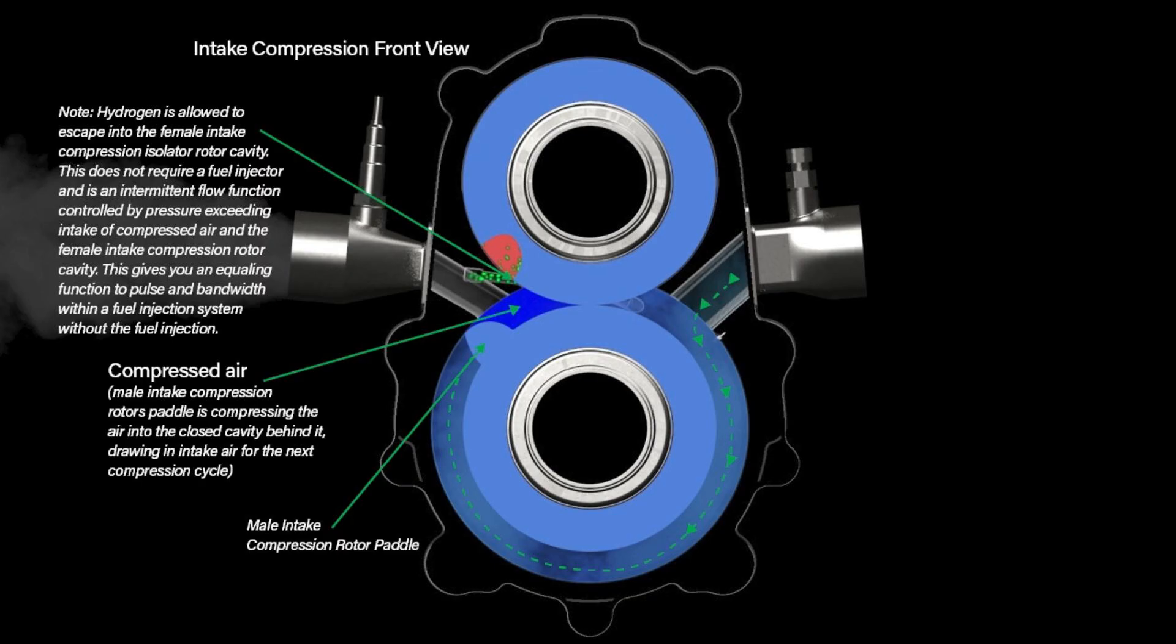This gives you an equaling function to pulse and bandwidth within a fuel injection system without the fuel injection. Note the compressed air in dark blue where the male intake compression rotor's paddle is compressing the air into the closed cavity behind it, drawing in intake air for the next compression cycle.